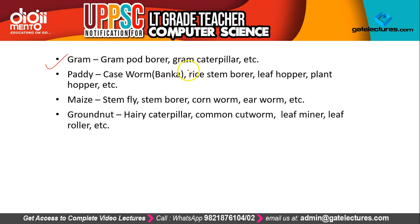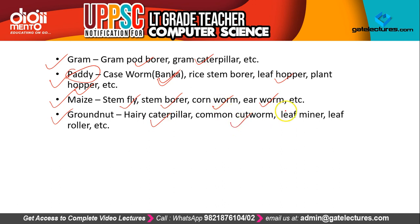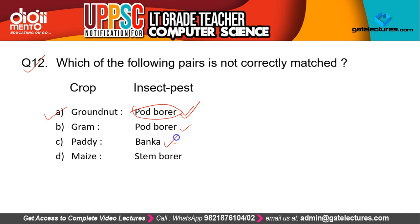For background: gram has gram pod borer and gram caterpillar as main insect pests. For paddy/rice, banka, rice stem borer, leaf hopper, and plant hopper are the pests. For maize, stem fly, stem borer, corn worm, and earthworm are the pests. For groundnut, hairy caterpillar, common cutworm, leaf miner, and leaf roller are the main insect pests. So gram gets pod borer, paddy gets banka, maize gets stem borer, but groundnut does not get pod borer — that is why the answer is A: groundnut and pod borer.